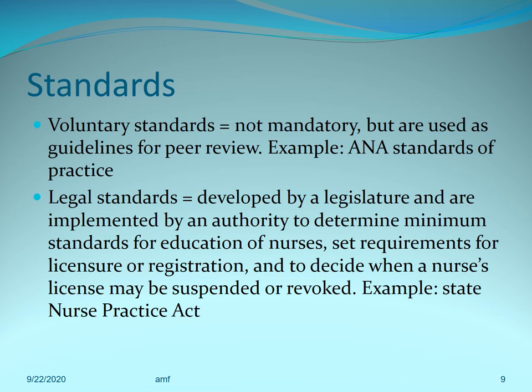Voluntary standards are not mandatory, but they're used to provide guidelines for peer review. They come from professional nursing organizations that continually assess the function, standards, and qualifications of their members. These organizations are guided by society's needs for nursing and the public's expectations. An example is the American Nurses Association standards of practice, found in Chapter 1 of your textbook — these are voluntary professional standards that often can direct patient care.